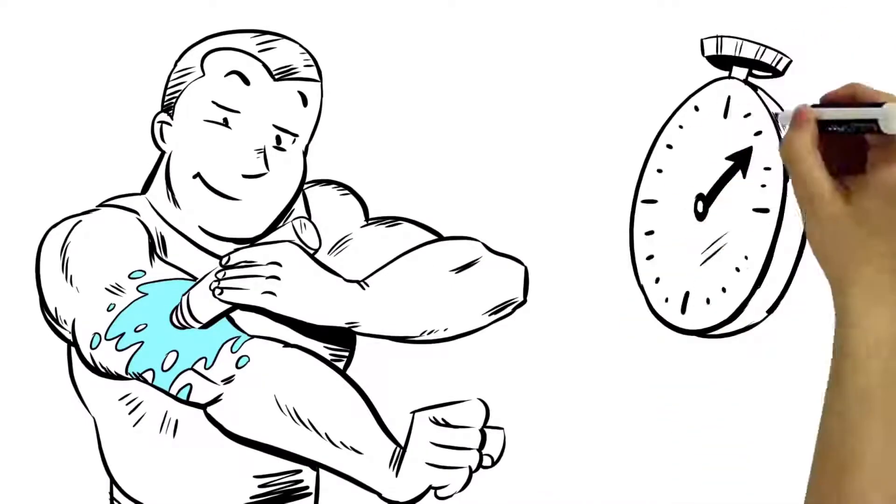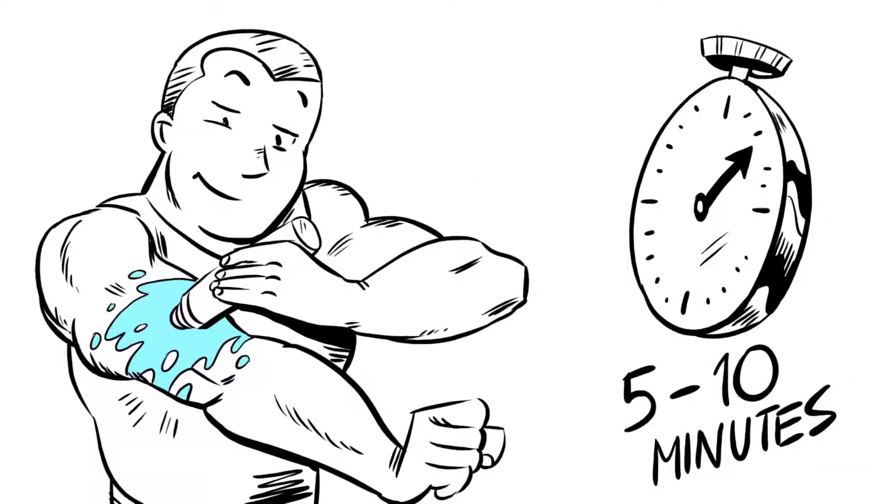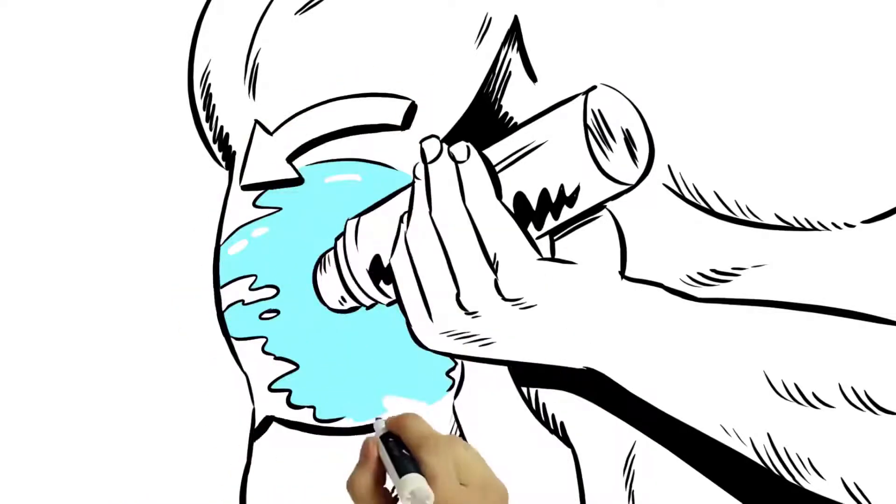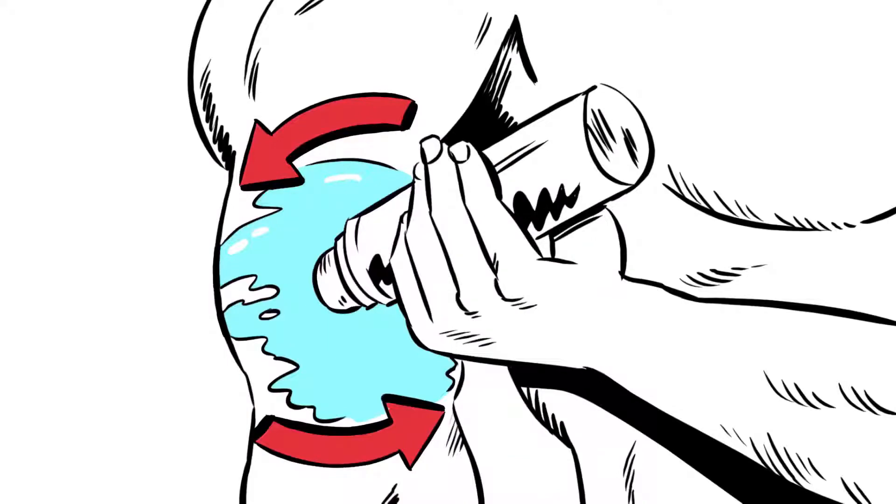Simply roll on a thin layer of guns of steel five to ten minutes prior to training. Apply directly to biceps and triceps in circular motion until liquid is fully absorbed and reapply as needed.